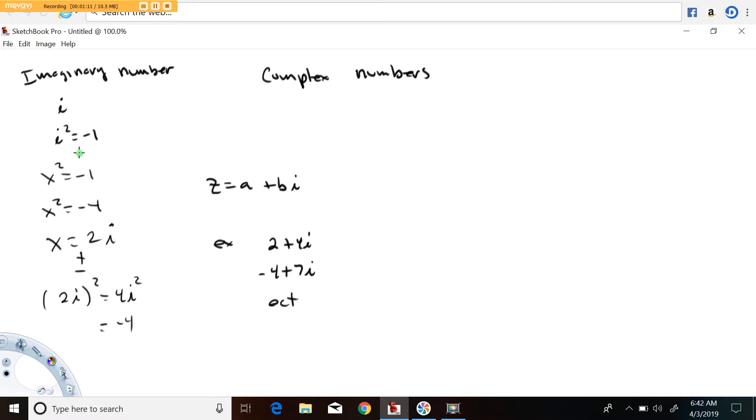So i is what's referred to as an imaginary number. It's the value that solves this equation. It's the value that when you square it, you get negative one.